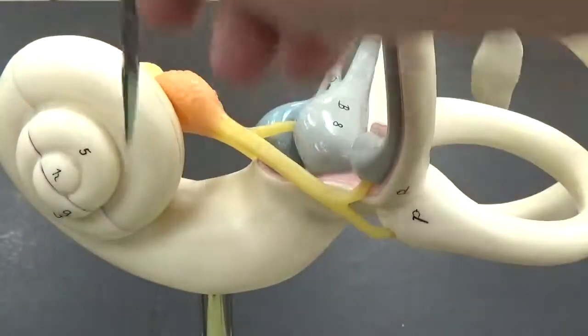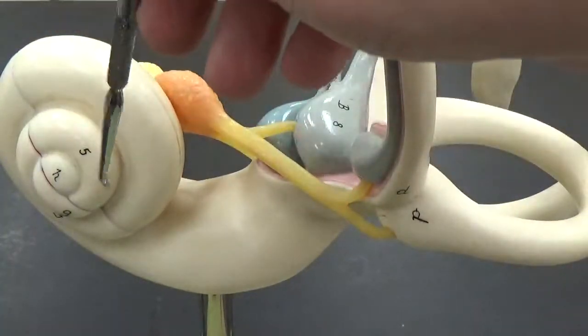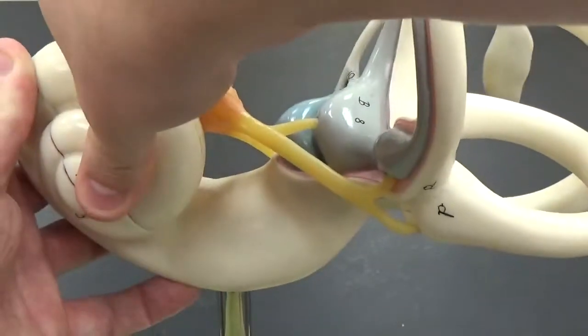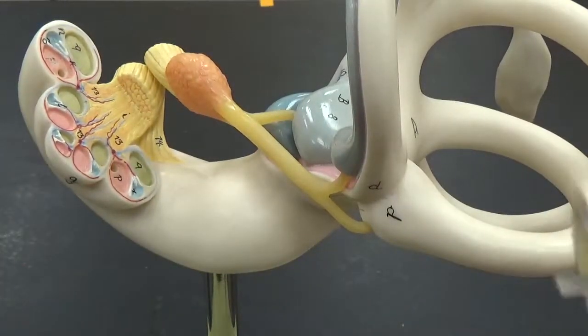Those sound waves come into the cochlea, which is this snail-like structure over here. Inside that is your cochlear ducts, so you can see those holes there.